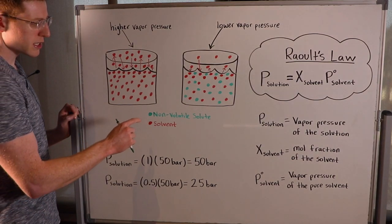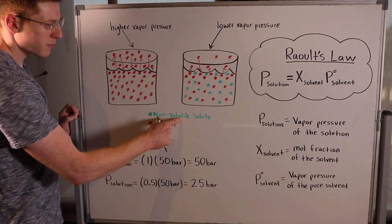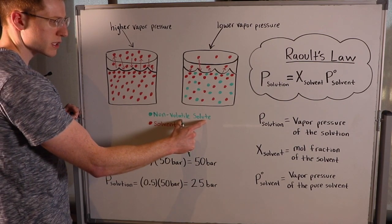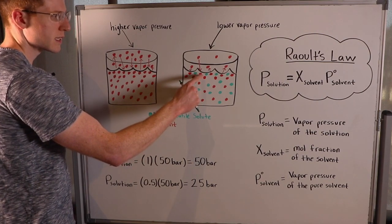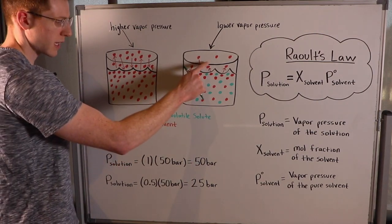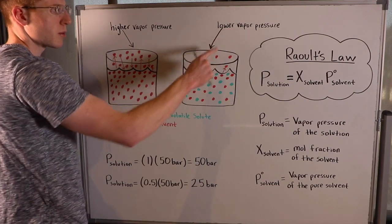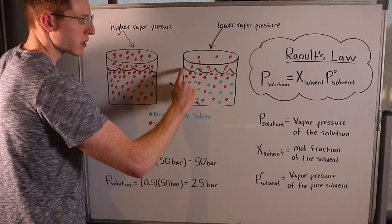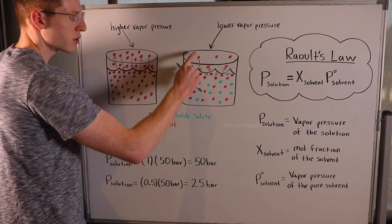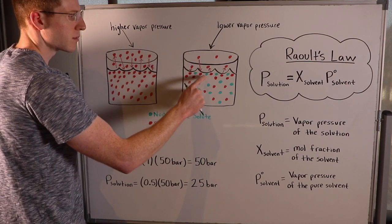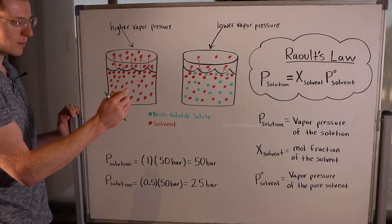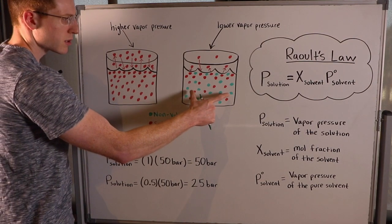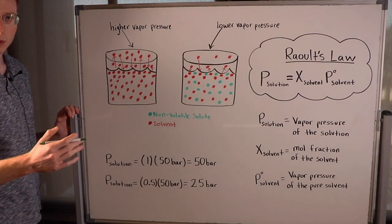Raoult's Law says that if you add a non-volatile solute — represented by the green dots — which is something dissolved into the solution that cannot evaporate at the surface like the red dots can, then you lower the vapor pressure. The reason is that the solute crowds out the surface, making it harder for the red dots to evaporate. So whenever you dissolve a non-volatile solute into a pure solvent, you lower the vapor pressure. That's Raoult's Law.